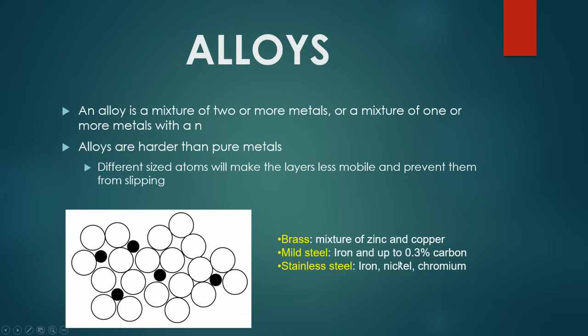There are a couple of examples. Brass is a mixture of zinc and copper. Mild steel is a mixture of iron with a small amount of carbon. And stainless steel is a mixture of iron, nickel, and chromium.